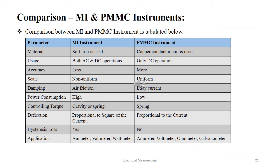Comparing the MI and the PMMC instrument: the MI instrument uses soft iron as the material while PMMC uses a copper conductor coil. The MI instrument is used in both AC and DC operation, whereas the PMMC instrument only finds application in DC operation. MI instruments are less accurate than the PMMC instrument. The scale is non-uniform for MI and uniform for PMMC. Damping is provided by the air friction method for MI and by the eddy current method in PMMC. Power consumption is high for MI and low for PMMC.